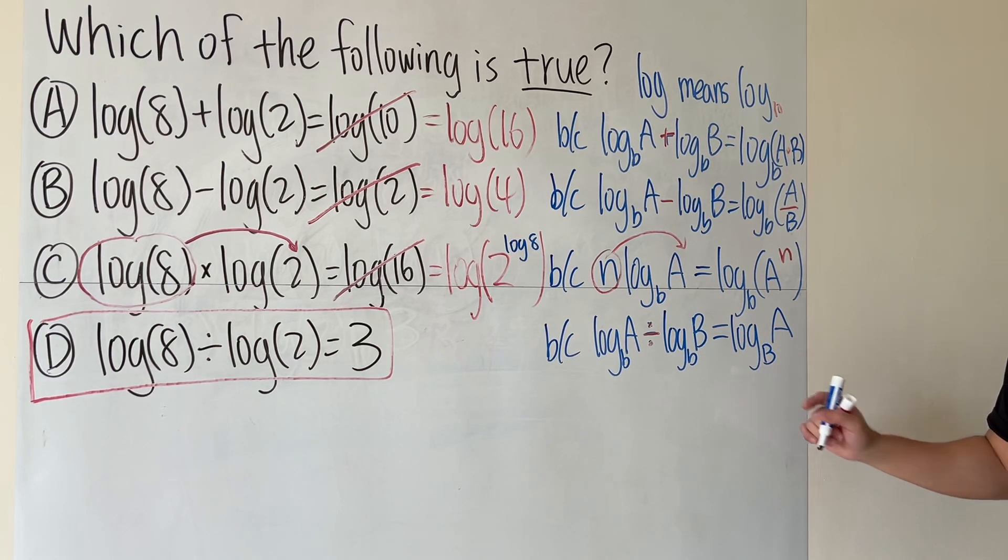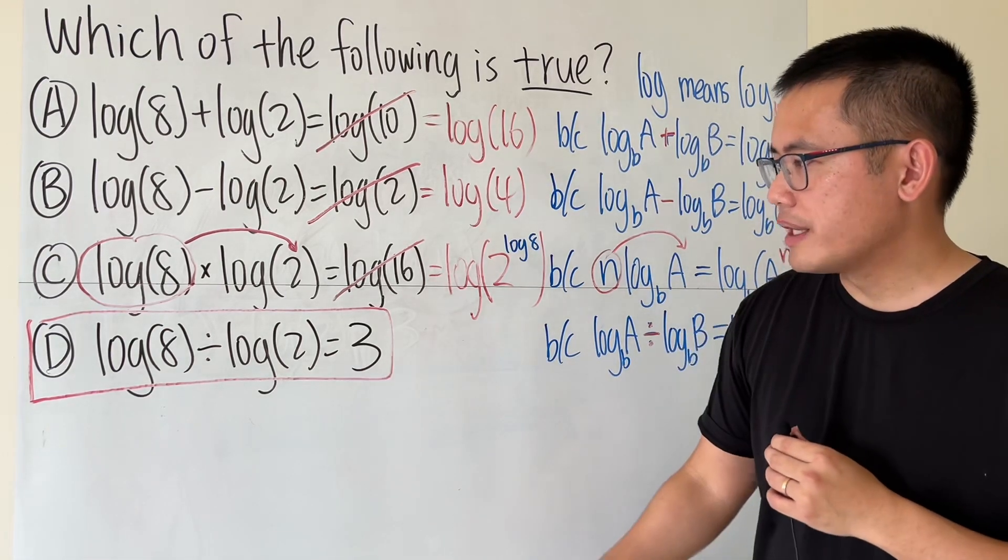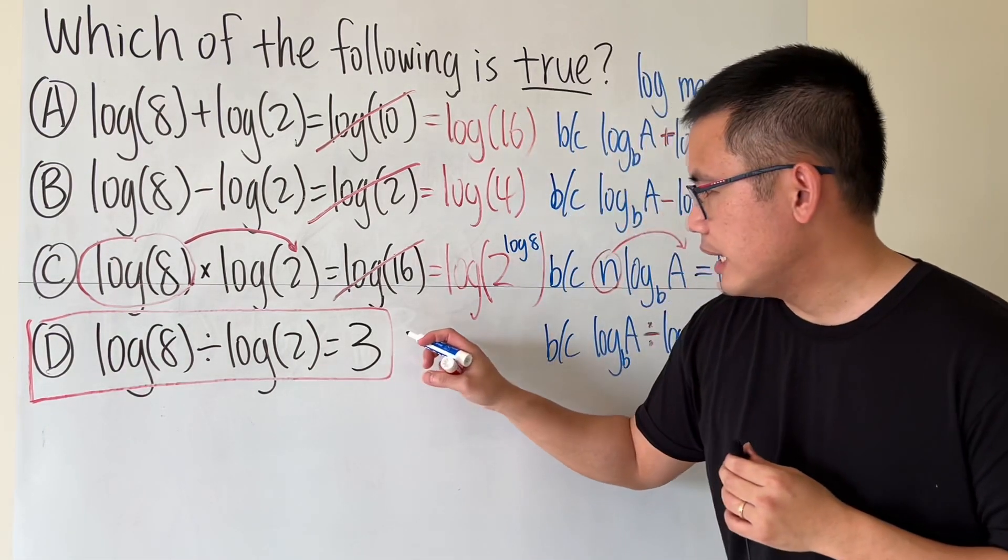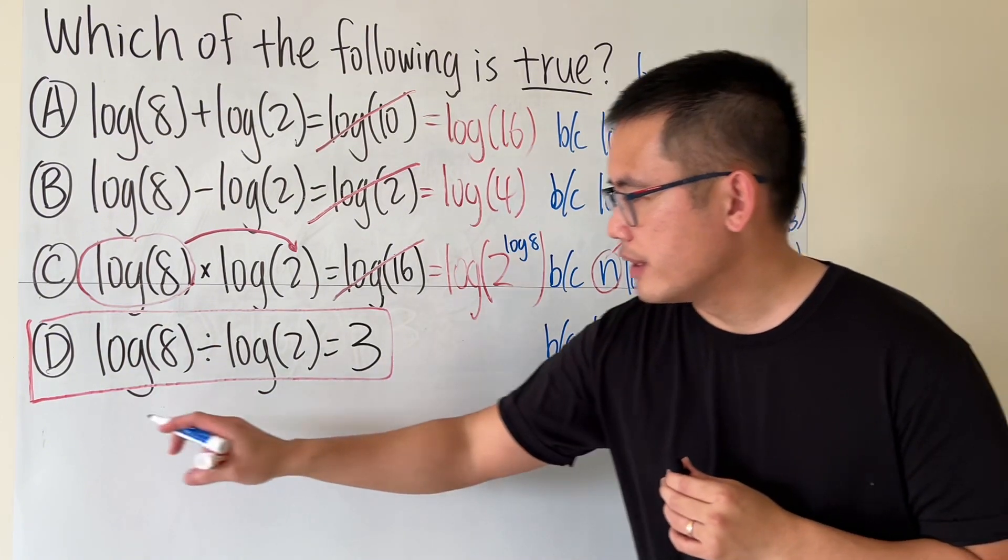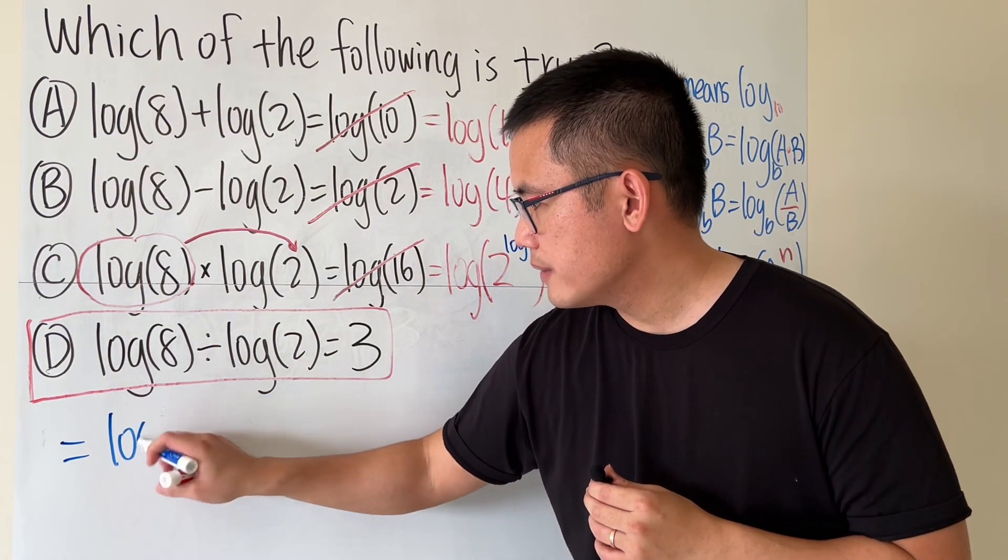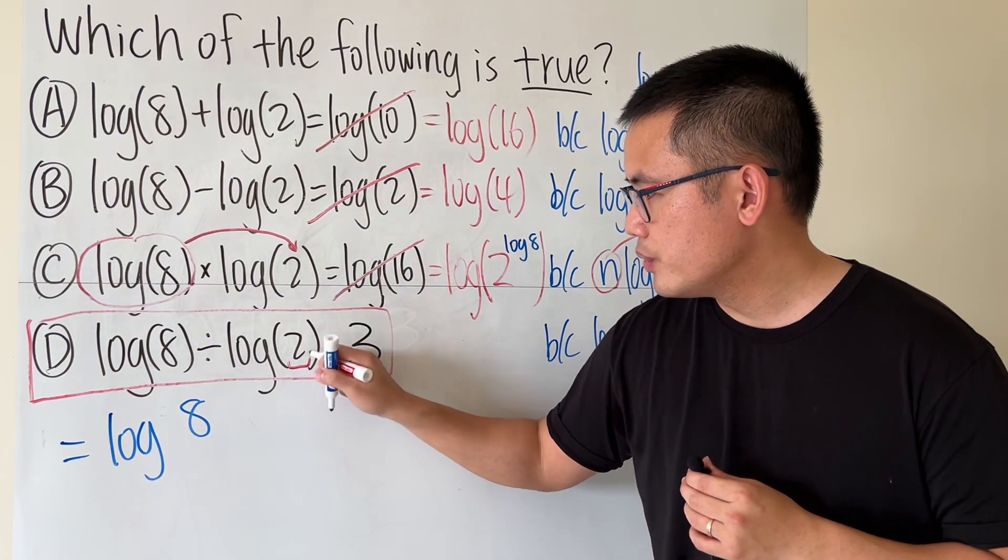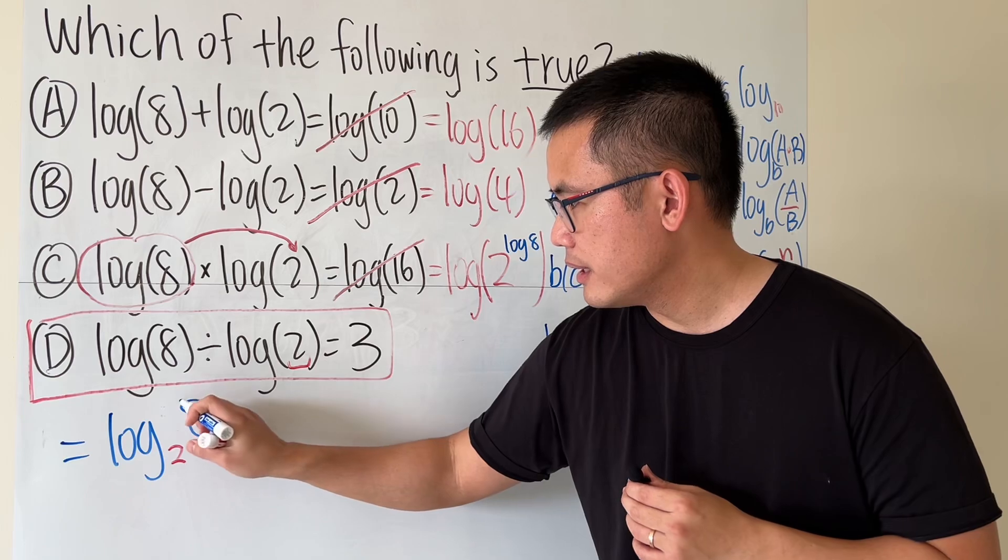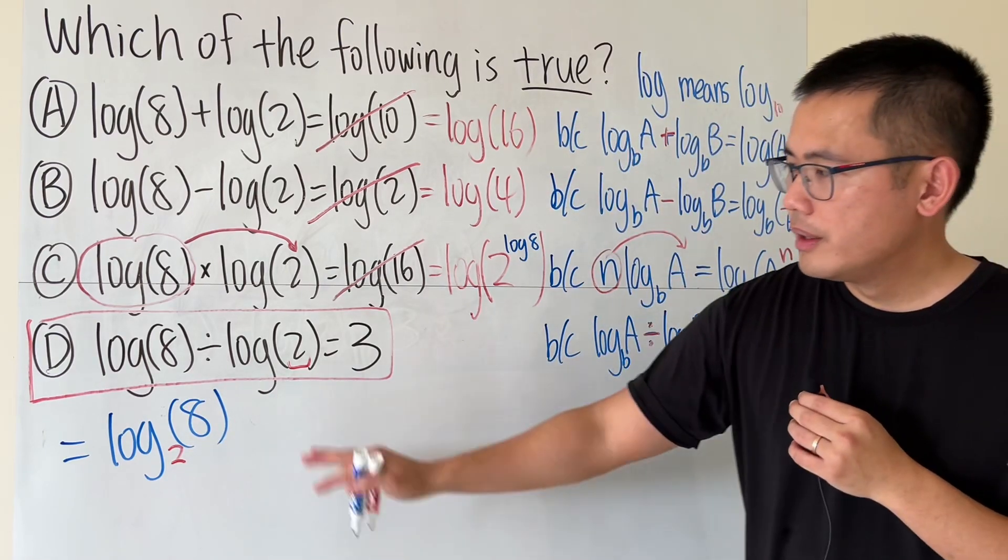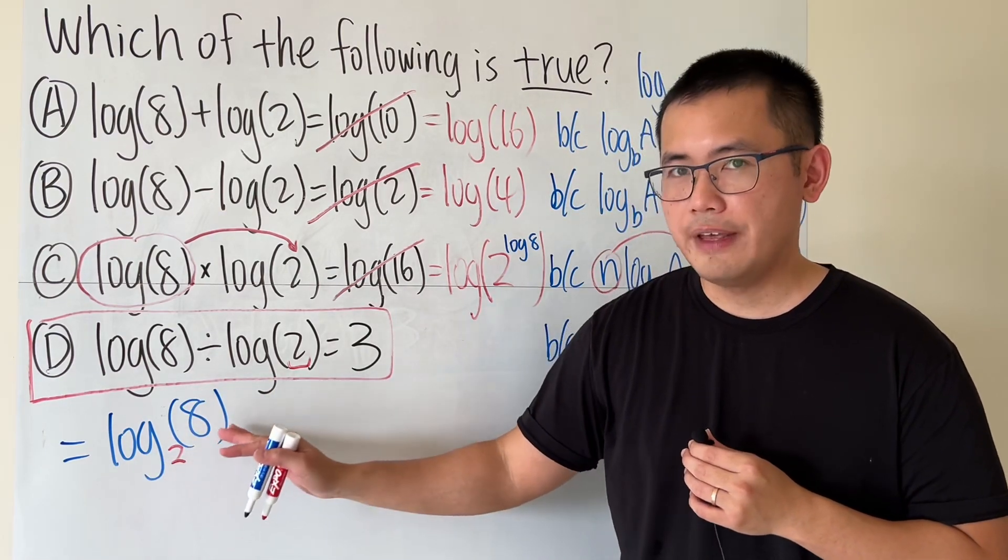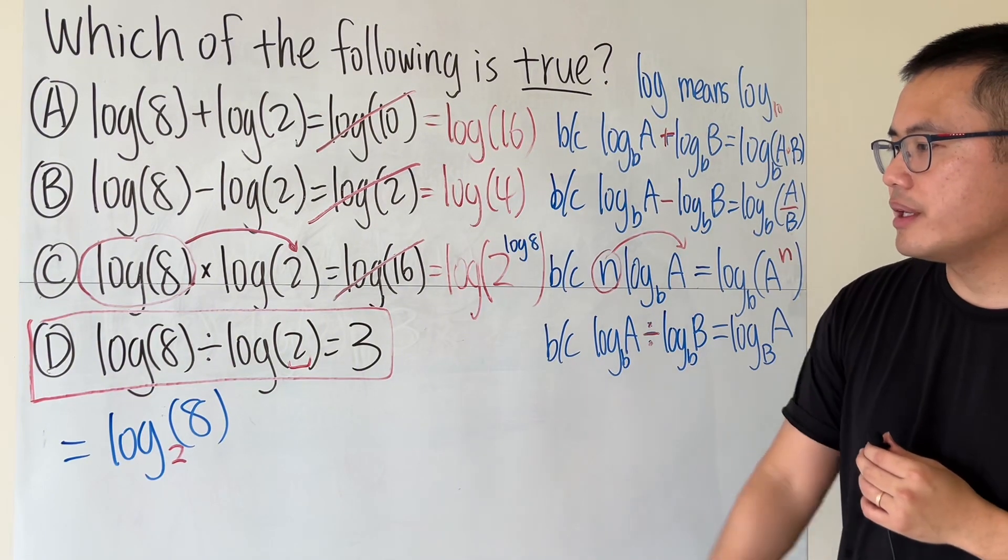I can work it out for you guys. This is the same as log, this number which is 8, and then this number 2 which is right down here like this. So it becomes log base 2 of 8. And in fact this is equal to 3.